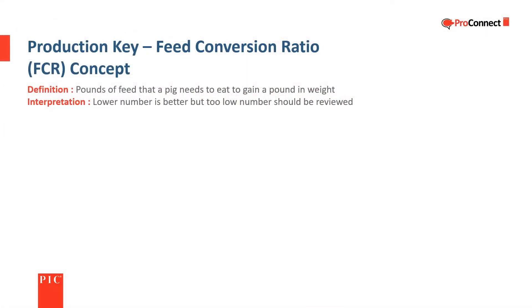The first key indicator we will discuss is the concept of feed conversion ratio. Simply put, it is the pounds of feed a pig needs to eat to gain one pound of weight. A lower number is better, but very low numbers should be reviewed.